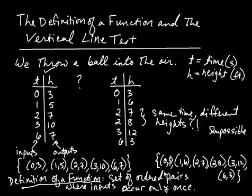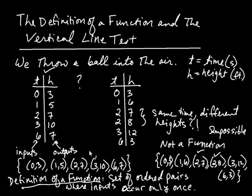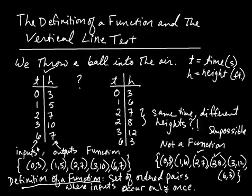Now look at the second set of ordered pairs. The inputs are: 0, 1, 2, 2, 3, 6. Do you see the 2 occurring twice? That's why this set is not a function — the inputs did not occur only once. But the first set is a function because every input occurred only one time.